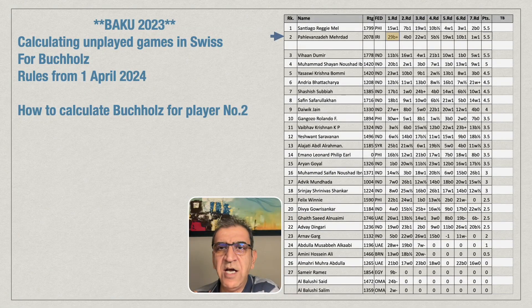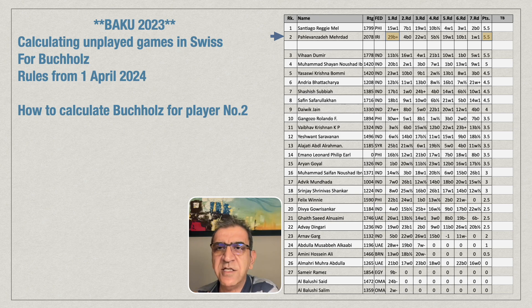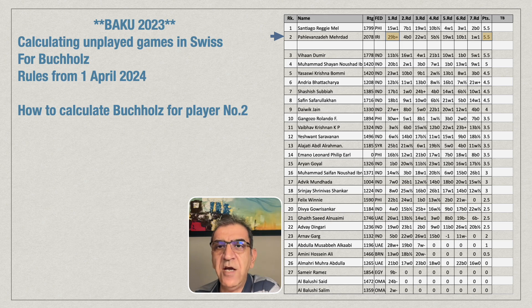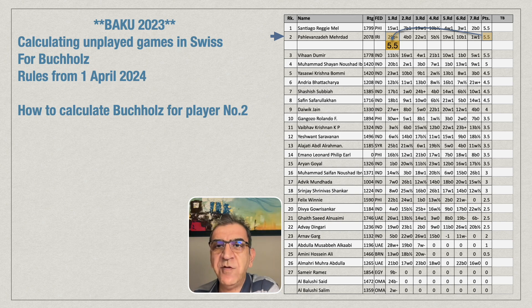Buchholz is the total points of the opponents that you played with, and the unplayed game calculation is very important as I mentioned. I am number two and I had the first round one unplayed game. Therefore, as mentioned, I should use the same score as myself. I had five and a half points at the end of the tournament. I was supposed to play against player number 29 who didn't come, so I won by forfeit. Therefore for Buchholz calculation I put just five and a half points for myself.